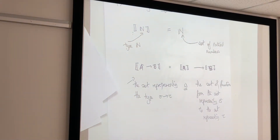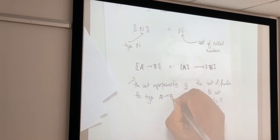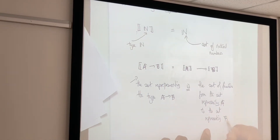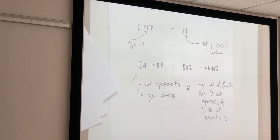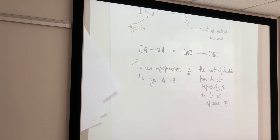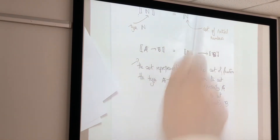Let me switch to Latin letters to make this clearer. If A is a type and B is a type, the set representing the type A → B is the set of functions from the set representing type A to the set representing type B. If I slip into Greek, remind me — go Roman, go Latin. Teaching is something we do together.